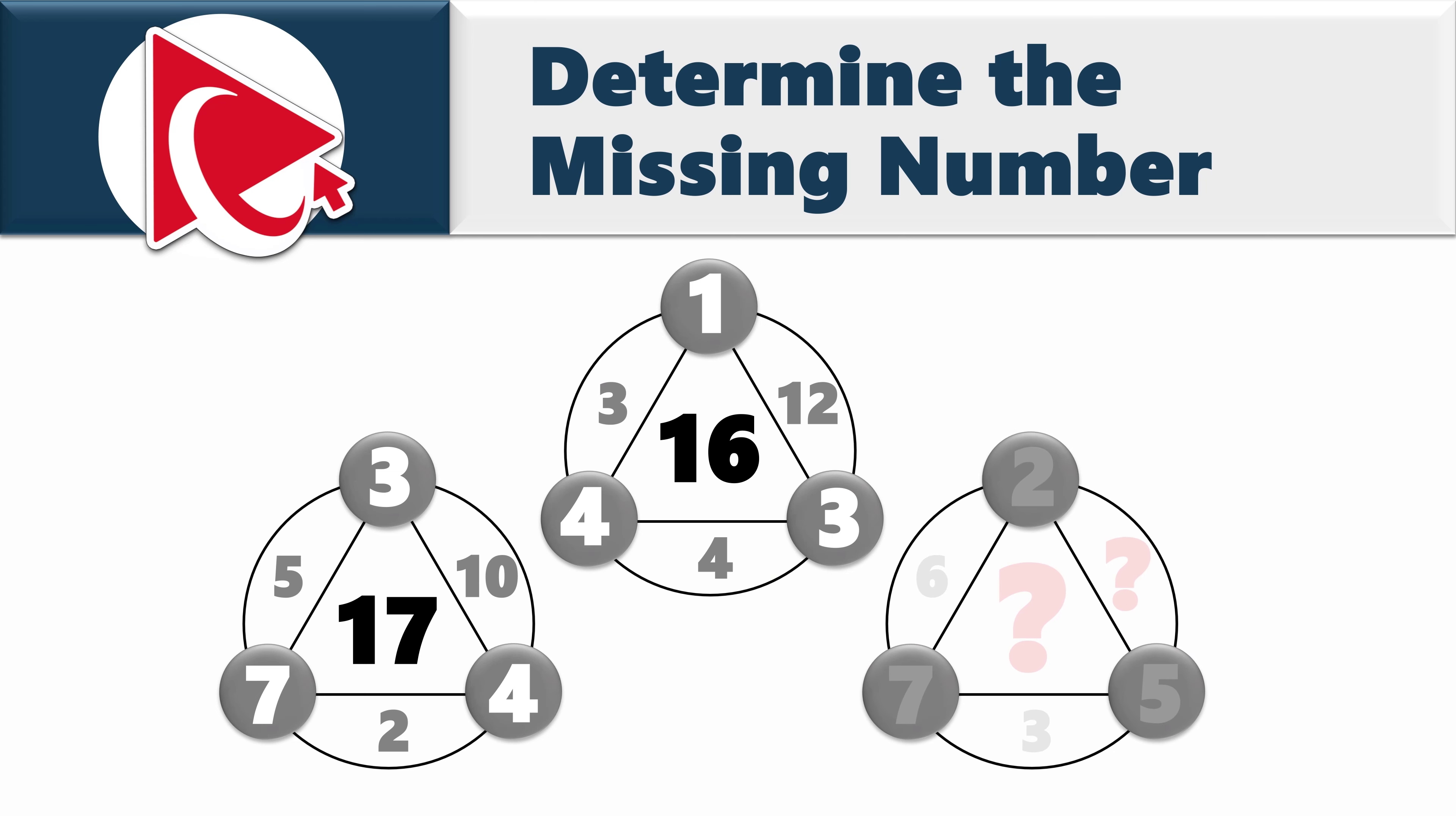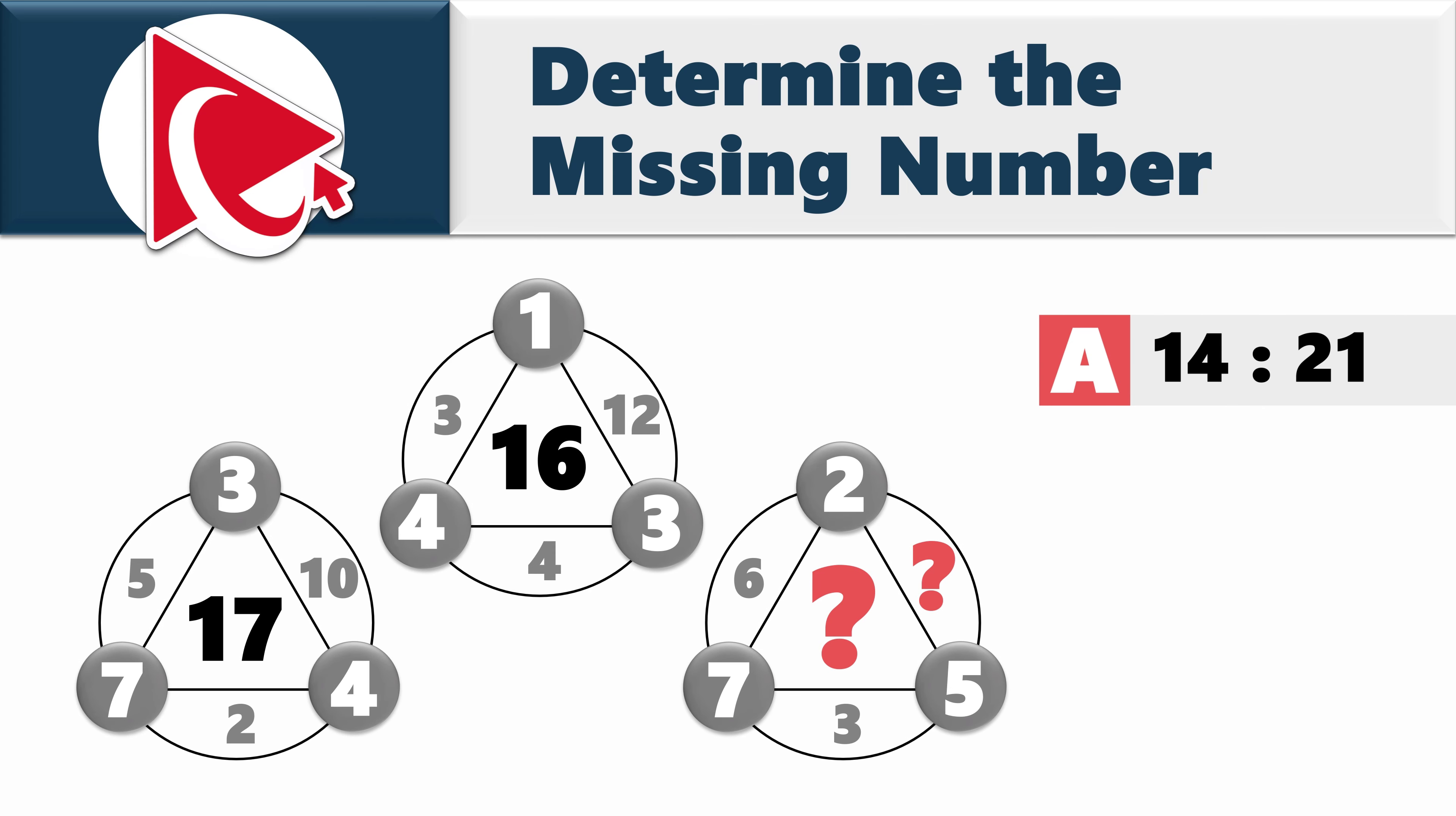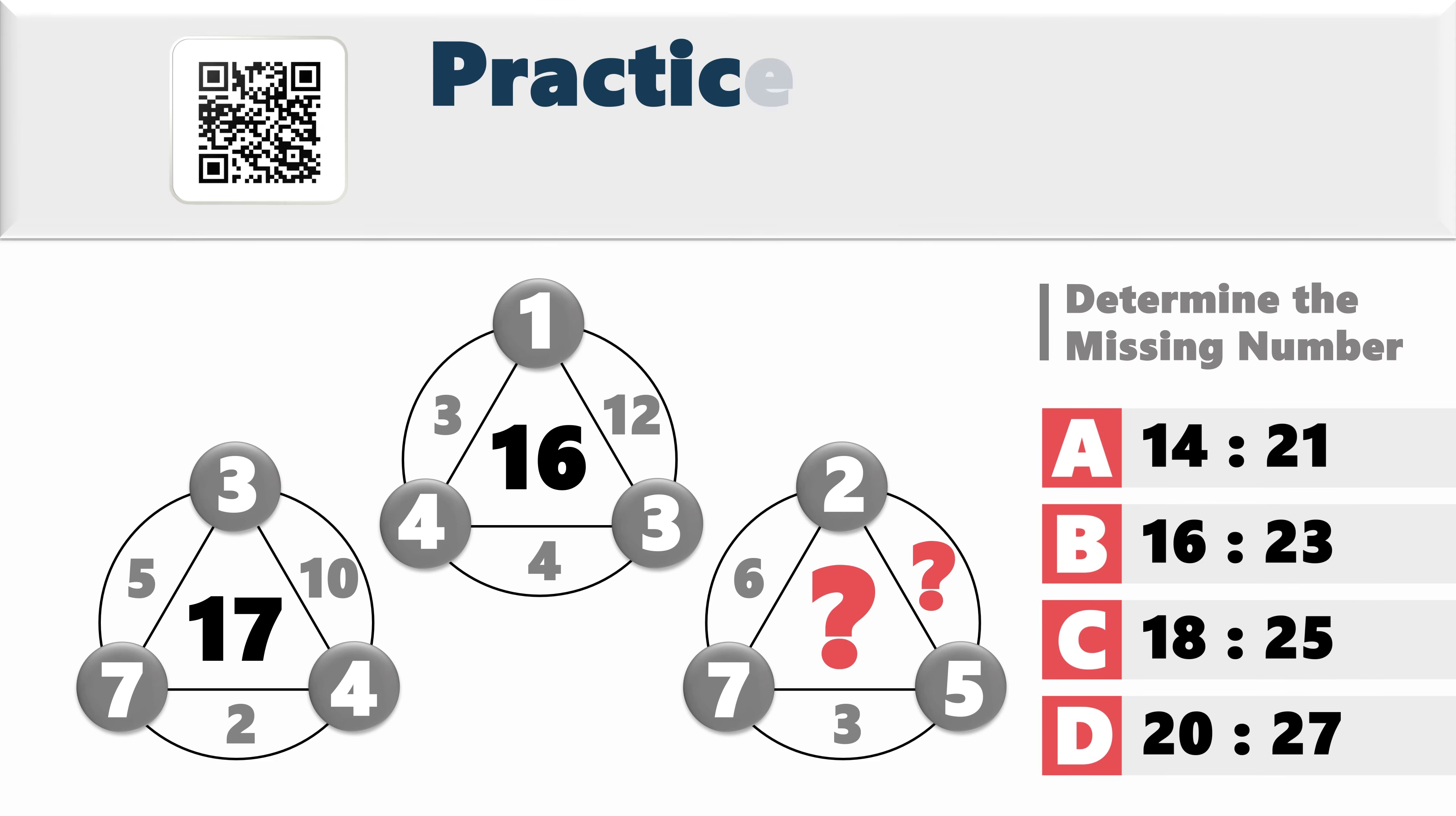The numbers in a small circle are 3, 4, and 1. And the numbers inside the large circle are 12, 4, and 3. Third circle looks a little bit more challenging. Because two numbers are missing. But the numbers in a small circle are 5, 7, and 2. And there are two numbers inside the large circles, 6 and 3. You need to calculate and select them out of four possible choices: choice A, 14 and 21, choice B, 16 and 23, choice C, 18 and 25, and choice D, 20 and 27.